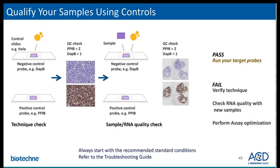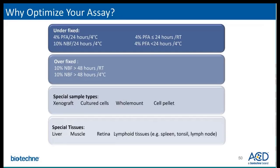It is critical to qualify your sample using control probes before running the assay using the target probes. Here are some potential reasons why you may need to optimize your assay: if samples are under-fixed, this can lead to over-digestion using standard conditions; if samples are over-fixed, the signal could be weak. There are also particular sample types that could require different pretreatment conditions. If your tissue of interest is not listed or you are unsure about fixation, please reach out to technical support.